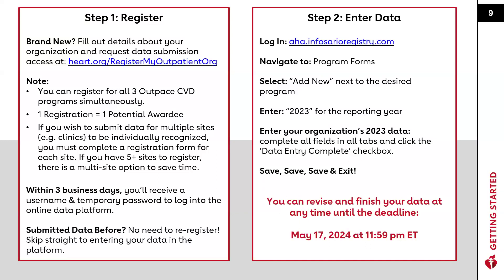The second step is to log in to the data platform and navigate to the Program Forms tab. Hit Add New, enter 2023, fill in all the fields, check the data entry complete checkbox, and then click Save and Exit. You can save and return to revise your data up until the May 17th deadline. We'll share where you can find a detailed walkthrough on entering data in a little bit.